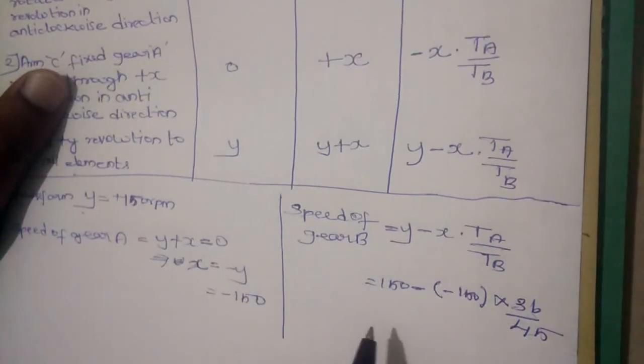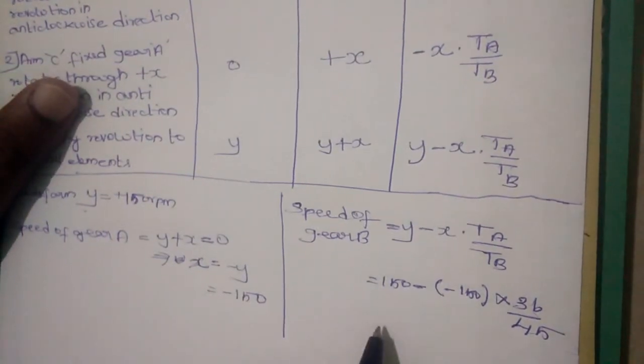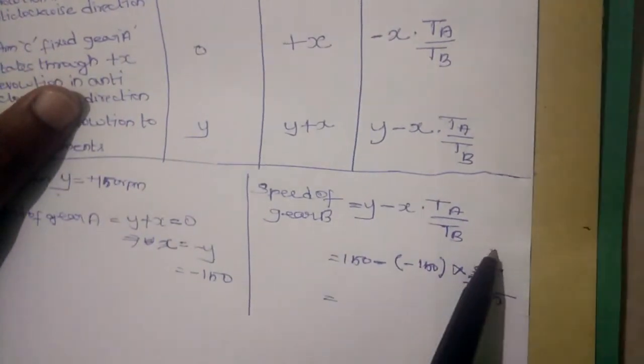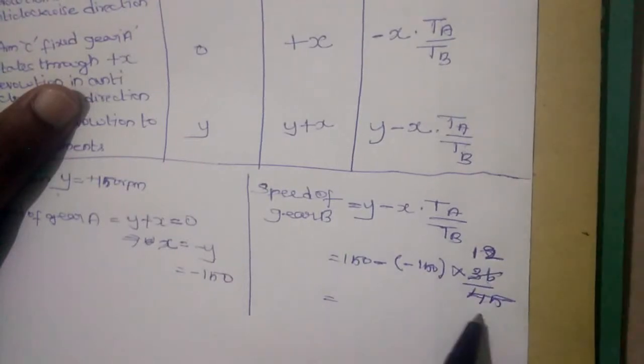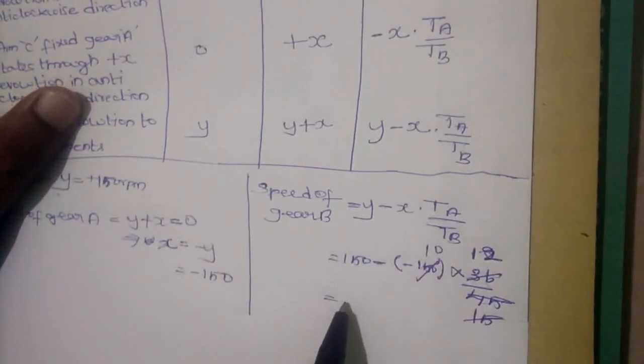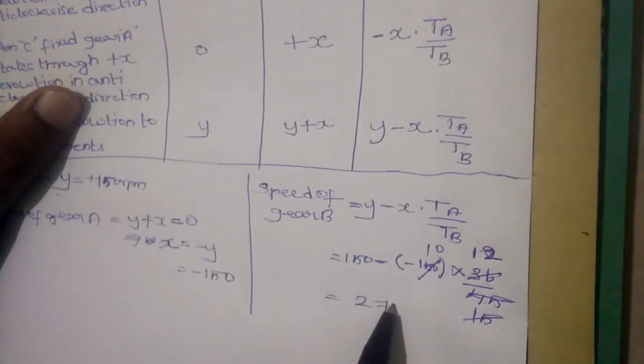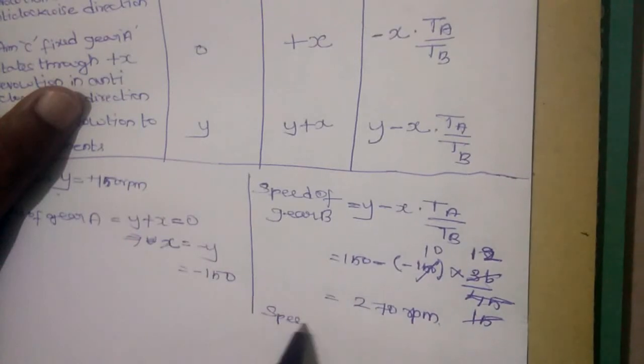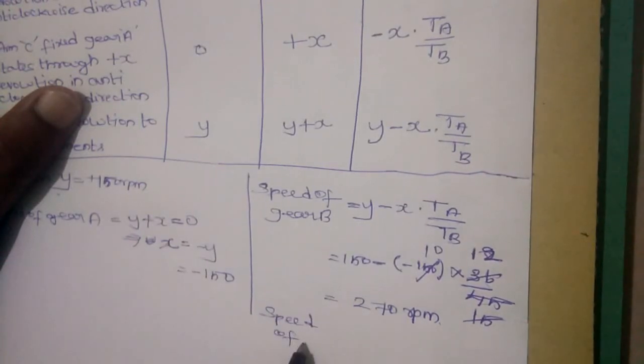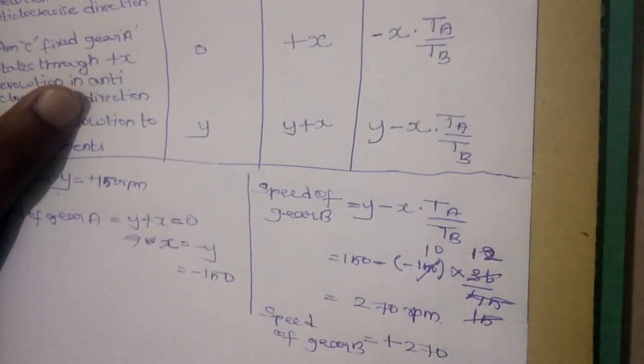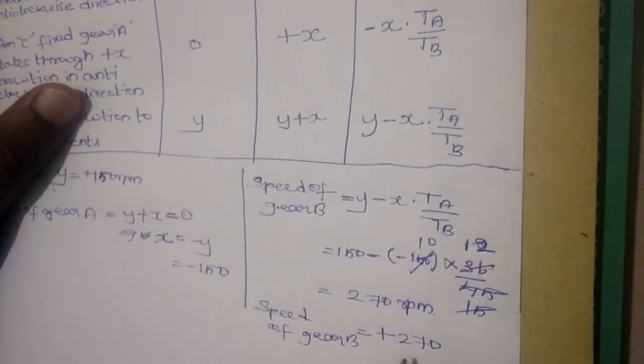On solving, 12 by 15, 10. Solving gives 270 rpm. Therefore speed of gear B, or gear B makes 270 rpm in the anticlockwise direction.